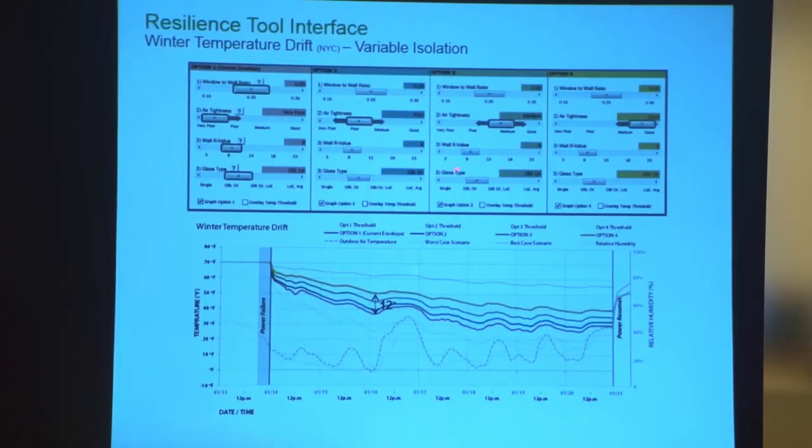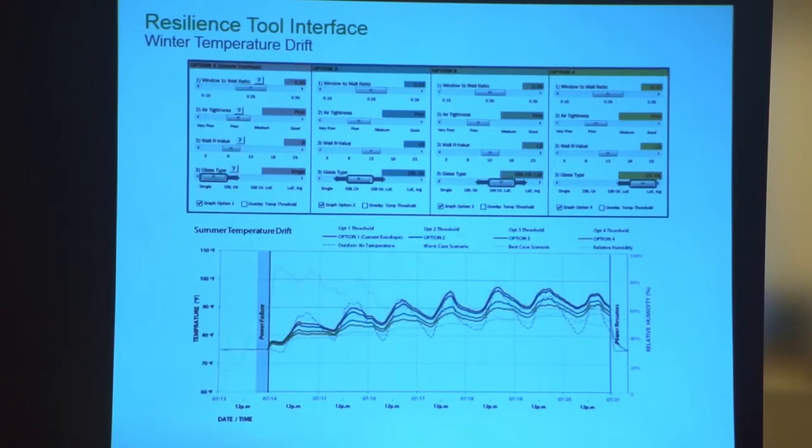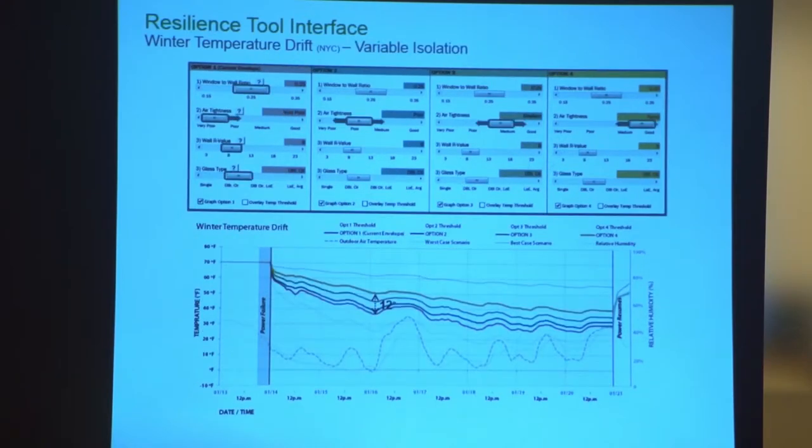And we found in many different climates, adjusting air tightness has a very large impact on passive survivability. This is one of the key ones, and then beyond that, the performance of the glass and the wall insulation is really important for the winter.